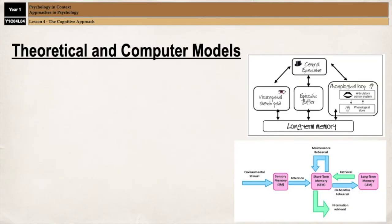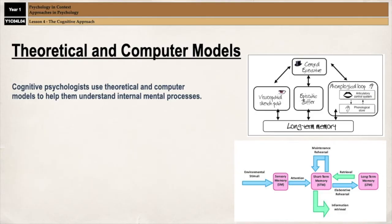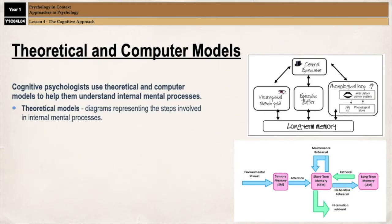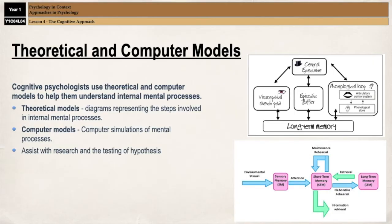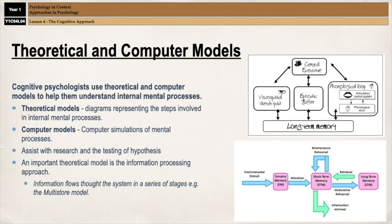In order to help cognitive psychologists understand internal processes, they use theoretical and computer models. Theoretical models are abstract and generally consist of diagrams depicting the flow of information or the flow of cognitive processing. Computer models, on the other hand, consist of computer simulations that are generally created with the help of programmers or program developers. Both types of models assist with research because they allow researchers to test their hypotheses, and then the models get changed depending on what they find. One important theoretical model is the information processing approach, which suggests that information flows through a sequence of cognitive systems, including input, storage, and retrieval.